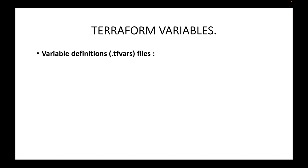In this session we are going to look at how you can declare your variables by making use of a variable definition file — basically a file ending with the .tfvars extension. In the last session we looked at how you can pass values from the command line using the hyphen-var flag. Now if you have lots of variables, say 20 or 30, providing those values on the command line can be very cumbersome, and that is where we can make use of a separate file altogether.